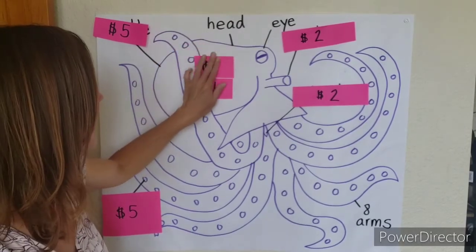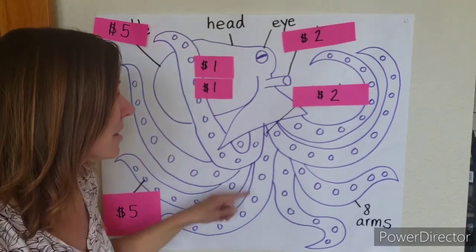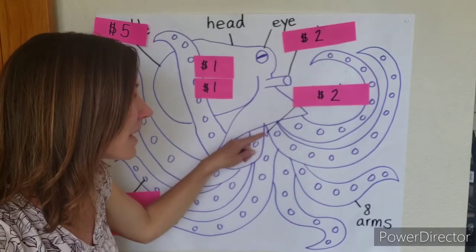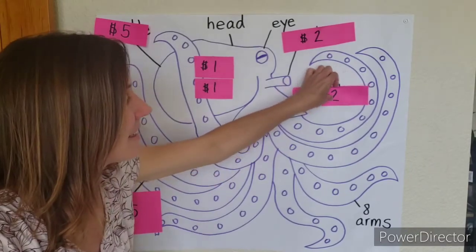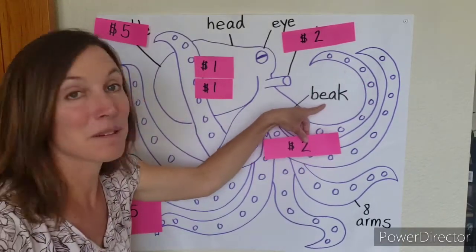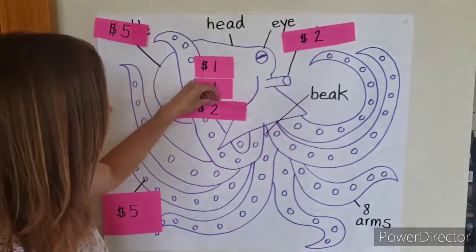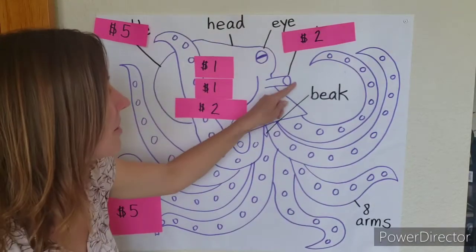Getting a little bit harder, what about this little thing? It kind of comes out of the bottom of his head and it helps him eat. This is called the beak.